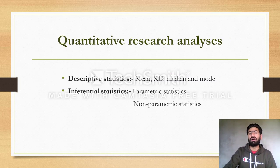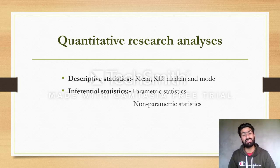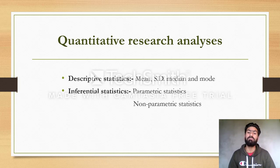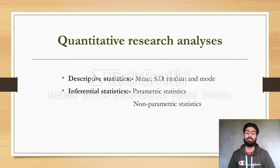Now let's look at quantitative research analysis. There are many statistical methods used to analyze data collected in numerical form. These include descriptive statistics — such as mean, standard deviation, median, and mode — and inferential statistics, which are divided into parametric and non-parametric types.